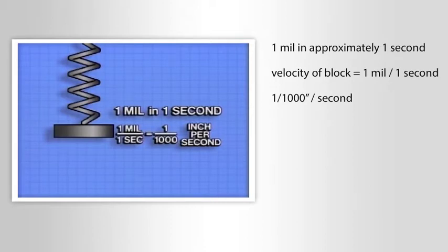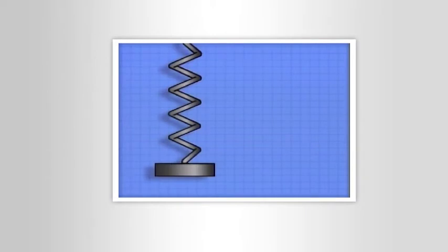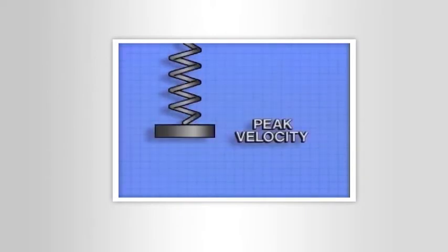The velocity of a vibration is constantly changing. For example, the velocity of the block is faster as it passes by its original position than it is when it reaches one of the extremes.